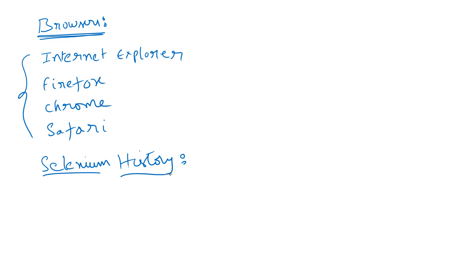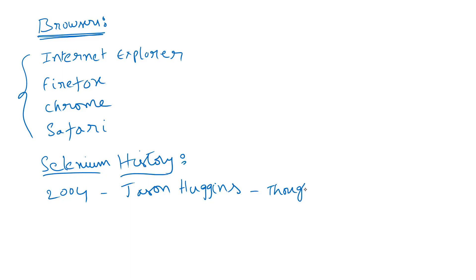Now coming to the Selenium history — Selenium first came into existence in 2004 when a guy named Jason Huggins was testing an internal application at ThoughtWorks. This is the guy who developed Selenium in 2004 while working at a company called ThoughtWorks.